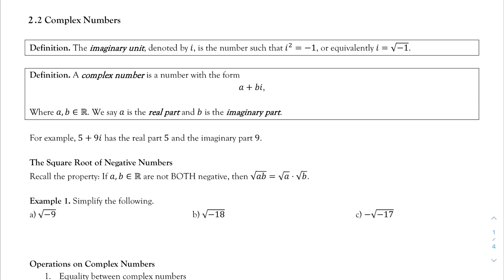Section 2.2: complex numbers. I mentioned a little bit about complex numbers in the previous section 2.1, but now let's go ahead and actually define them. Before this section, we could never do the square root of a negative number. But since it tends to show up often in many problems, mathematicians decided to create a new number called the imaginary unit, denoted by the letter i, defined so that i squared equals negative 1. More commonly, i equals the square root of negative 1.